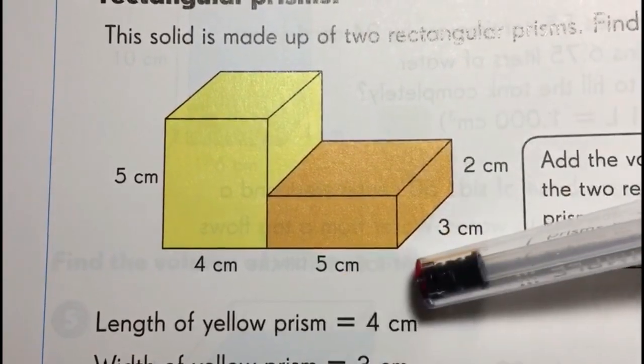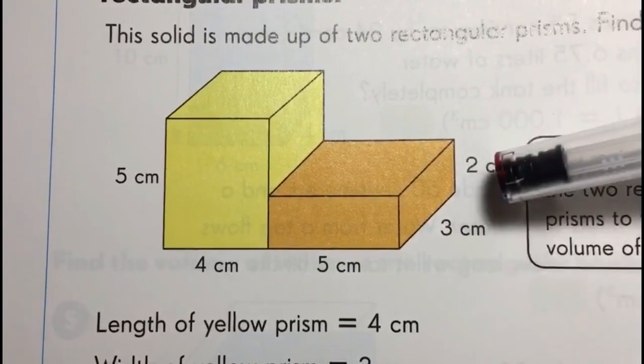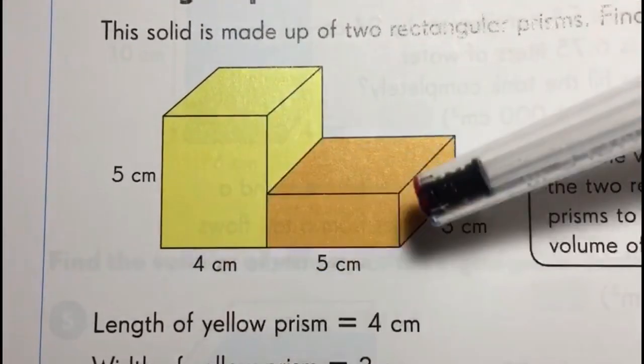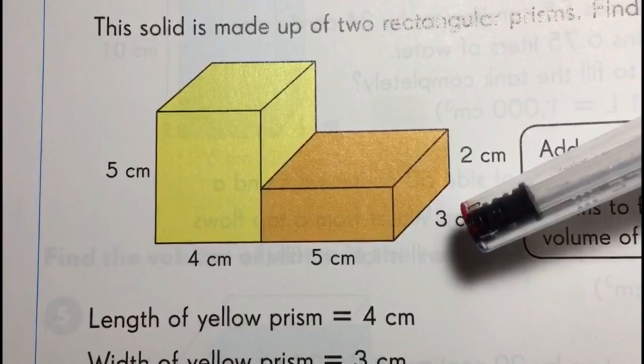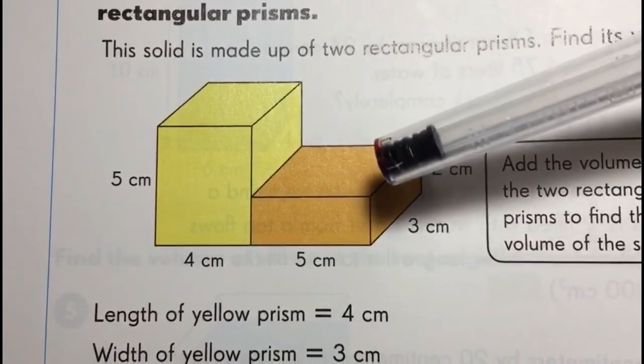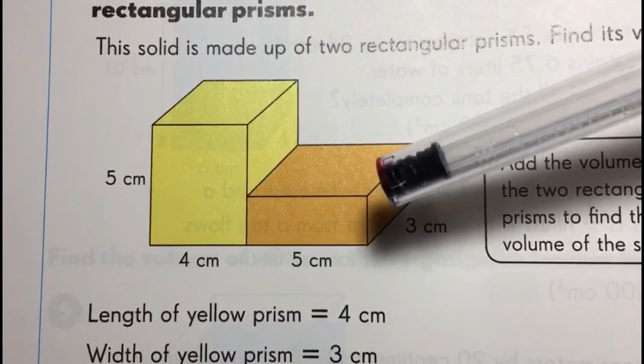Given all the lengths, widths, and heights, you just need to add up the two volumes together. So it's not something new; it's just one more step of what you've already learned.